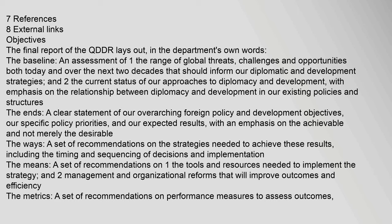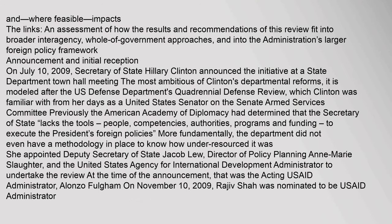The means: a set of recommendations on the tools and resources needed to implement the strategy, and management and organizational reforms that will improve outcomes and efficiency. The metrics: a set of recommendations on performance measures to assess outcomes and, where feasible, impacts. The links: an assessment of how the results and recommendations of this review fit into broader interagency, whole-of-government approaches, and into the administration's larger foreign policy framework.